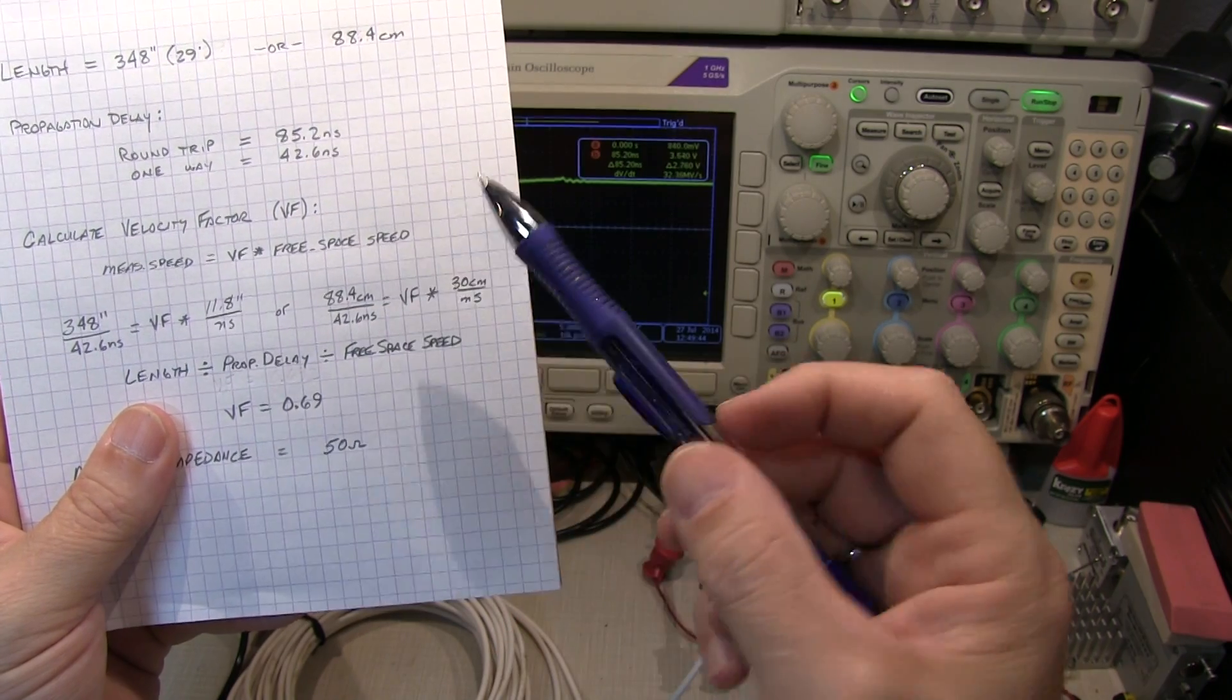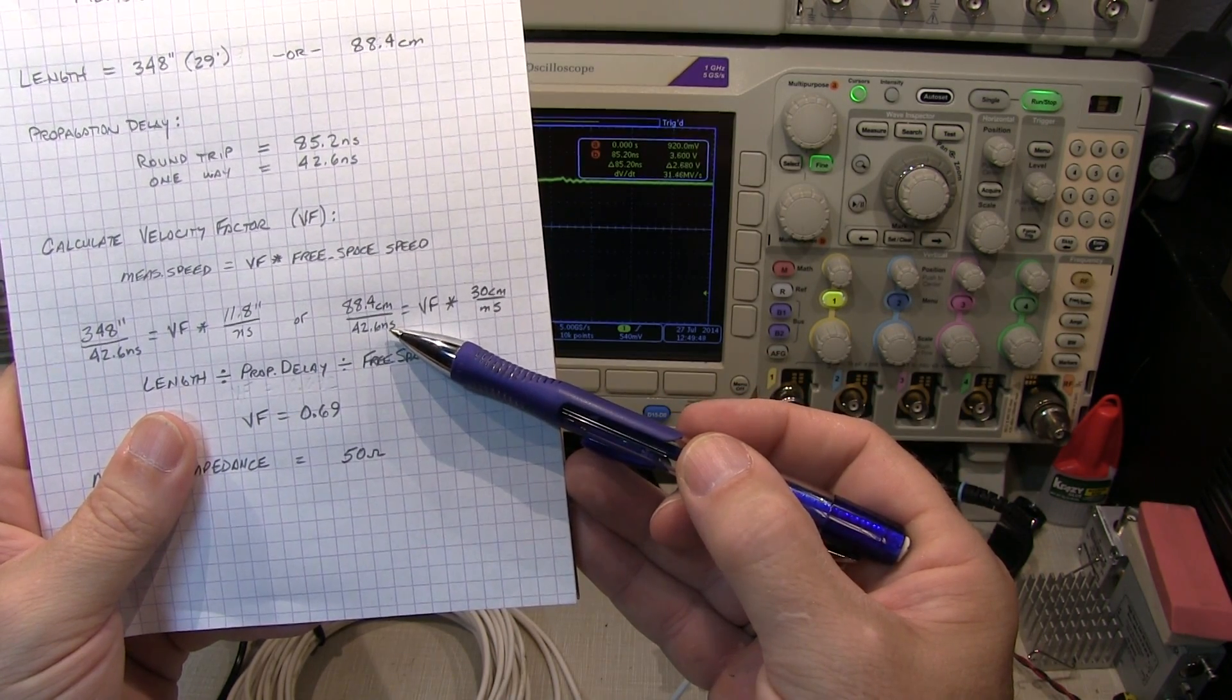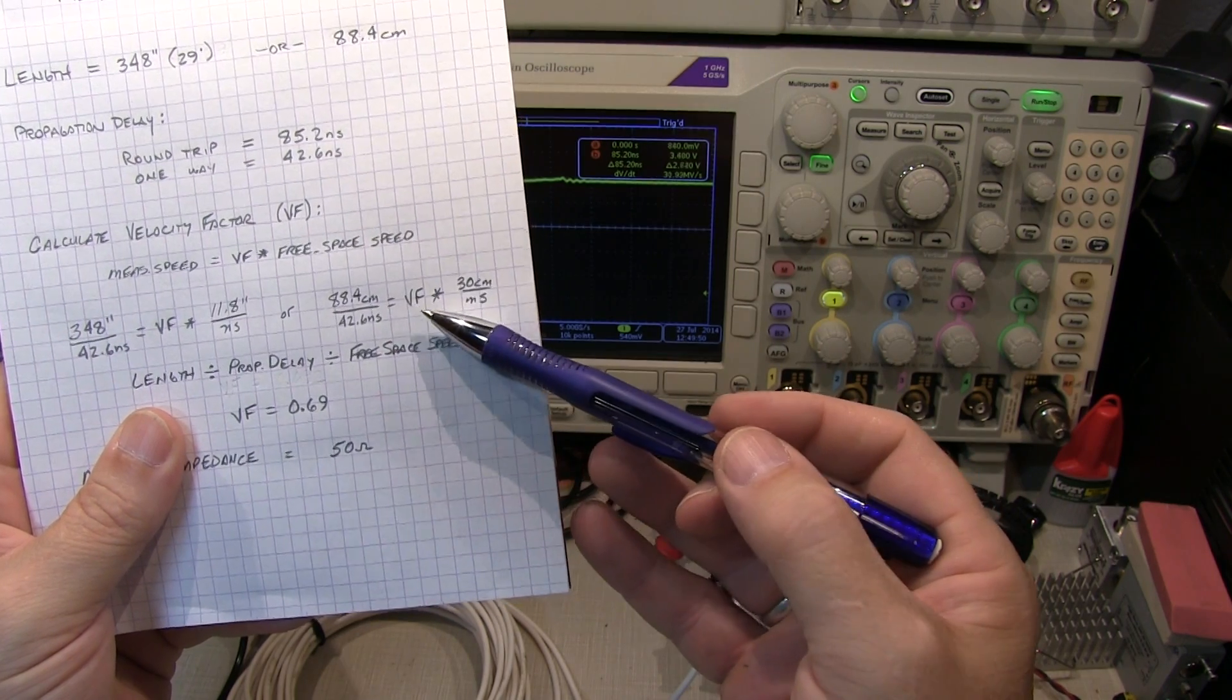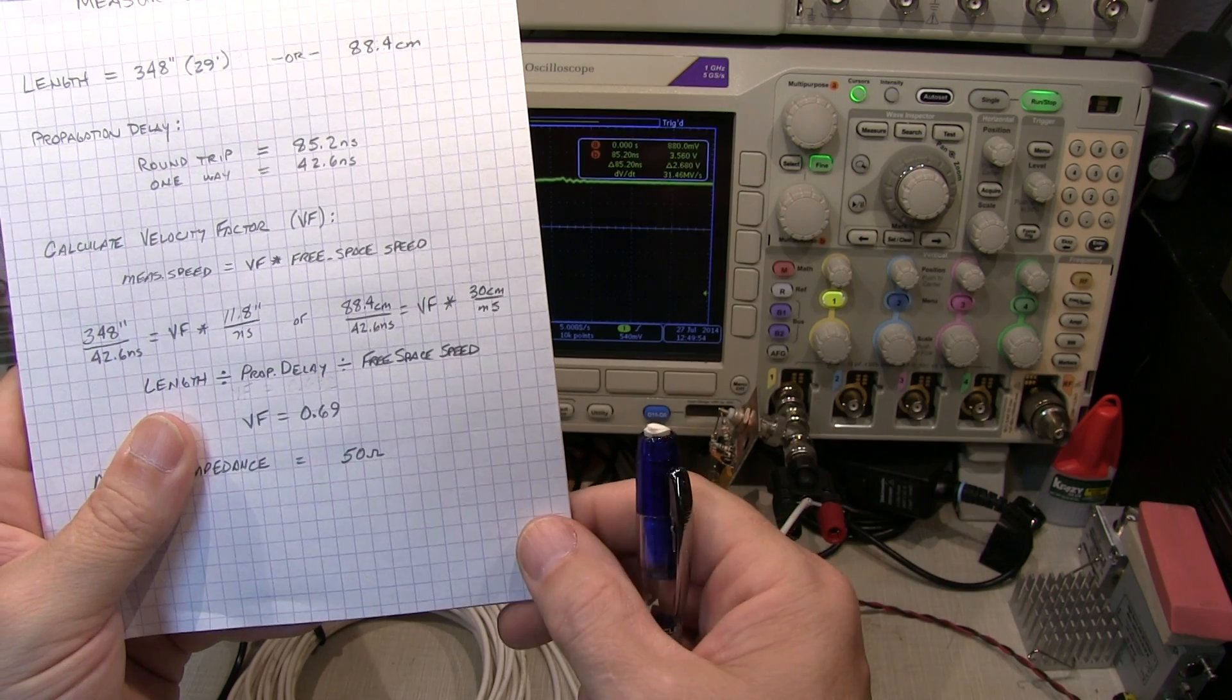Similarly in the metric units, 88.4 centimeters divided by 42.6 nanoseconds is equal to the velocity factor times 30 centimeters per nanosecond.